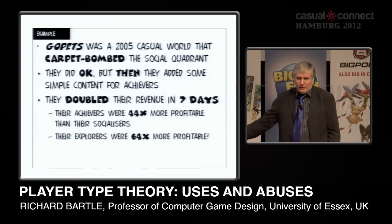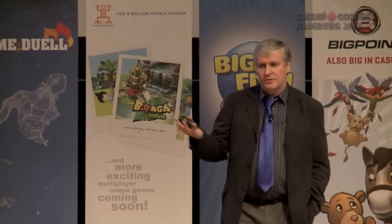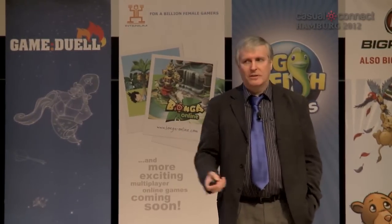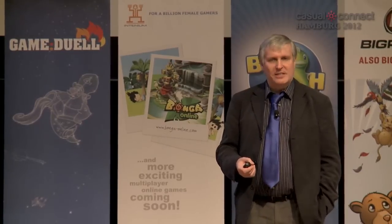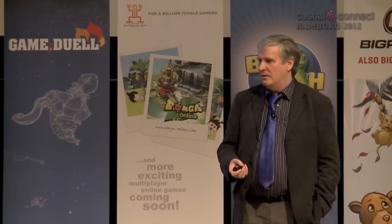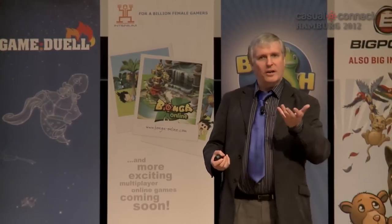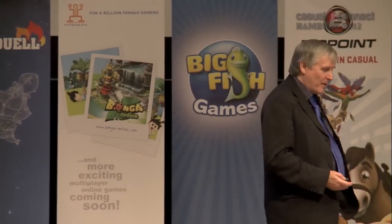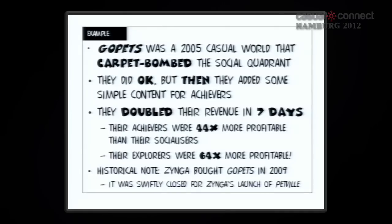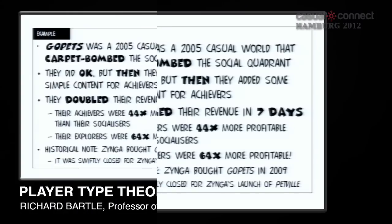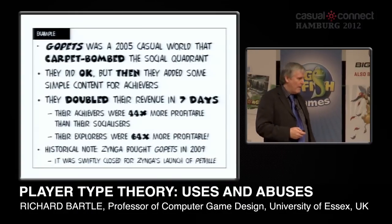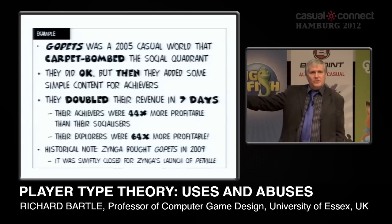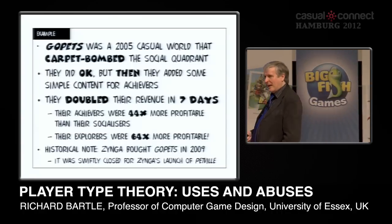By applying the player types theory — by saying you need a range of types — they improved their income. Even more socializers came along because the game was more vibrant, there was more to talk about: 'What kind of idiot stands under a tree for an hour to get a nut? You can just buy a nut!' As a historical note, GoPets was bought by Zynga in 2009, and about three or four days later it was closed down and Zynga opened Petville, which is pretty much the same game.